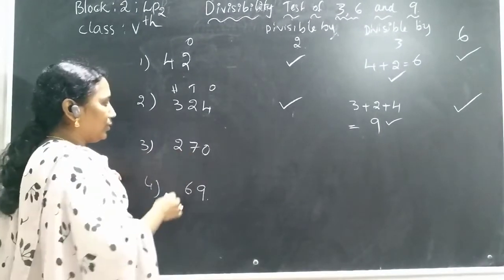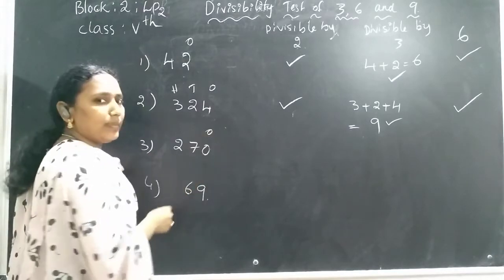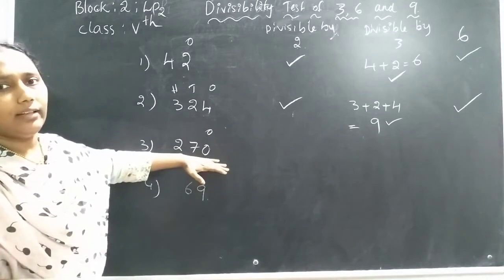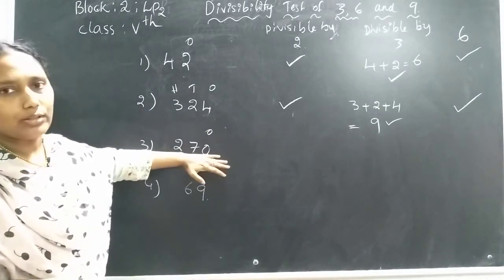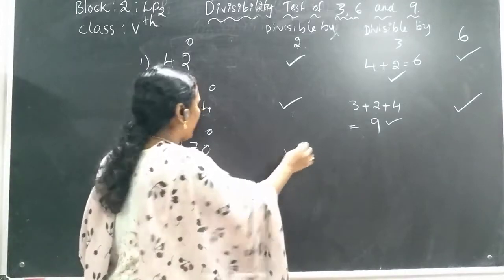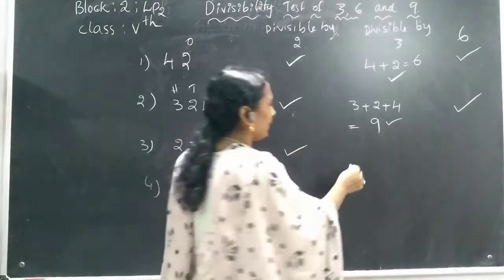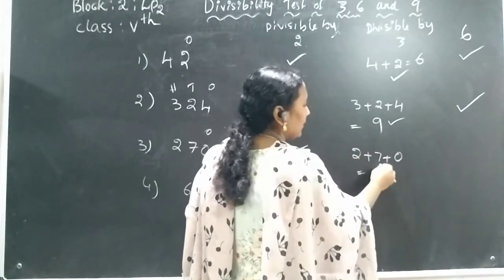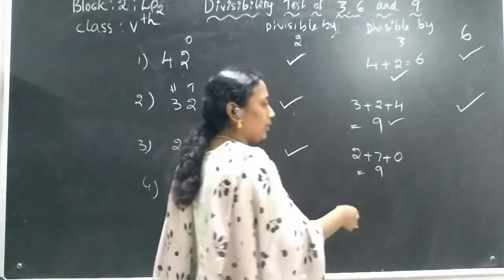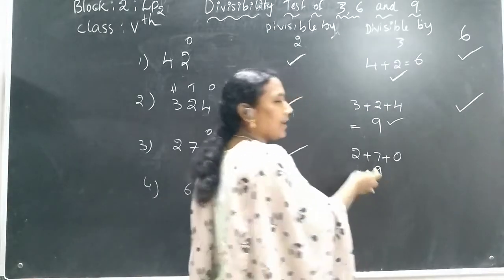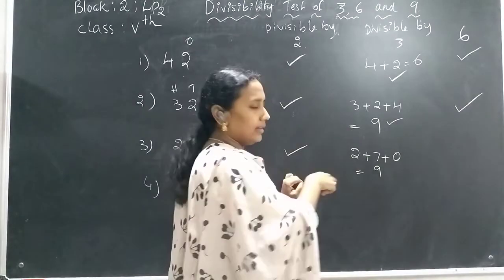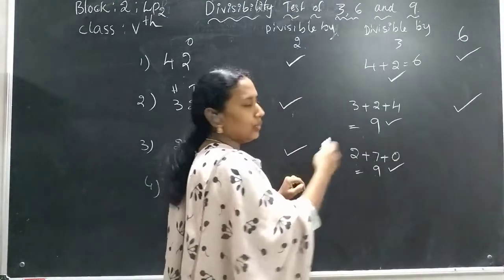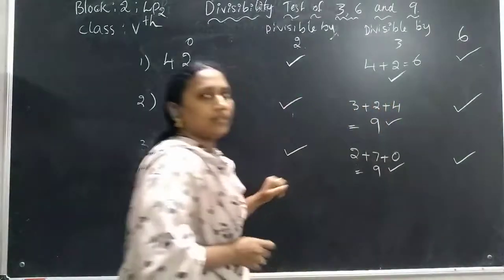Next number: 270. What is at the ones place? 0. Is 0 an even number? Yes, so 270 is divisible by 2. Now for divisibility by 3: 2 plus 7 plus 0. That is 2 plus 7 equals 9, then 9 plus 0 equals 9. Is 9 in the 3 times table? Yes — 3 times 3 is 9. So 270 is divisible by 3 and by 2, therefore it is divisible by 6.